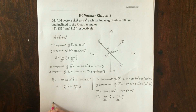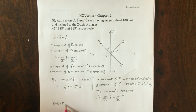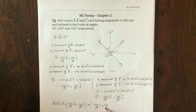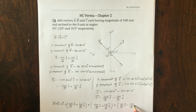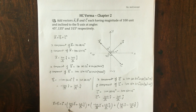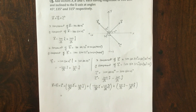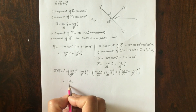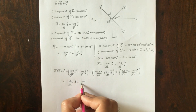Having converted all 3 vectors into component form, we add them: A + B + C = [(100/√2) i + (100/√2) j] + [−(100/√2) i + (100/√2) j] + [(100/√2) i − (100/√2) j]. The −(100/√2) i cancels with one term and (100/√2) j cancels with another, leaving (100/√2) i + (100/√2) j.